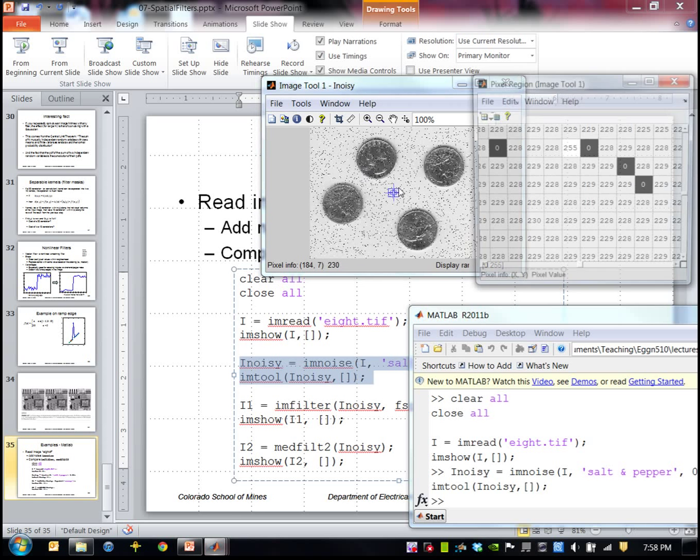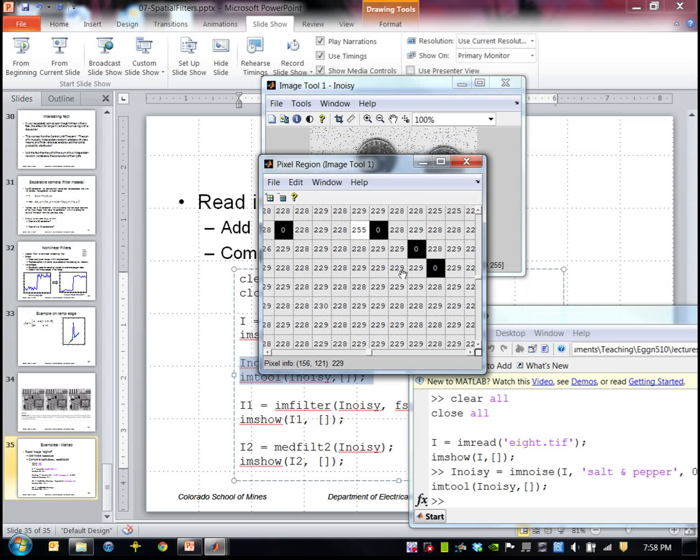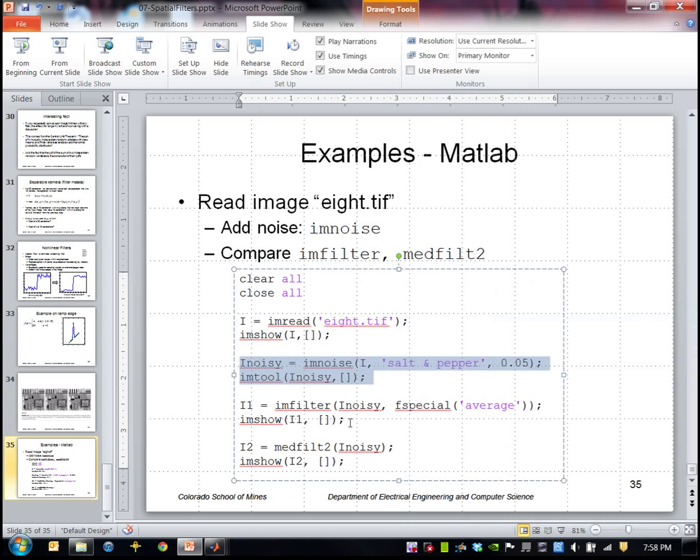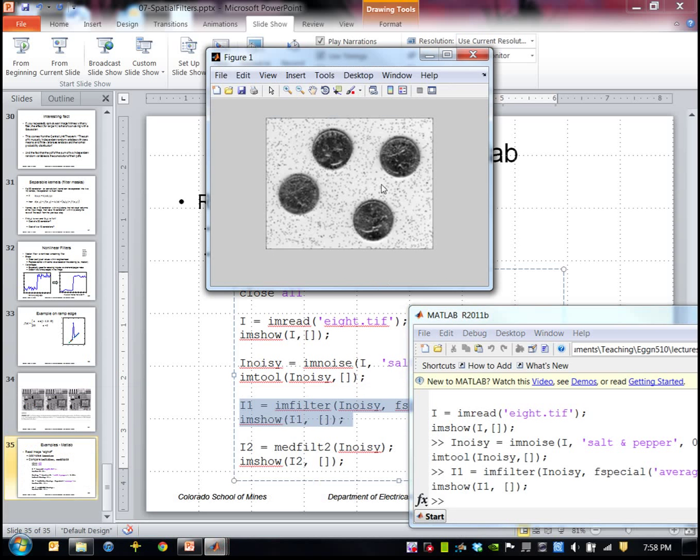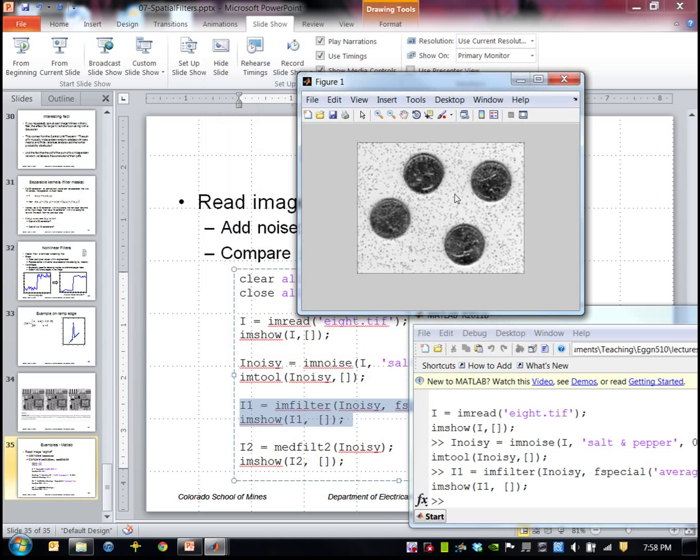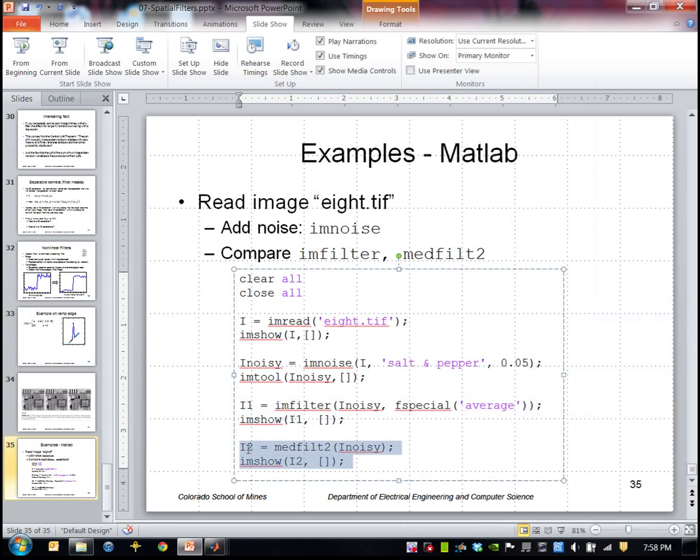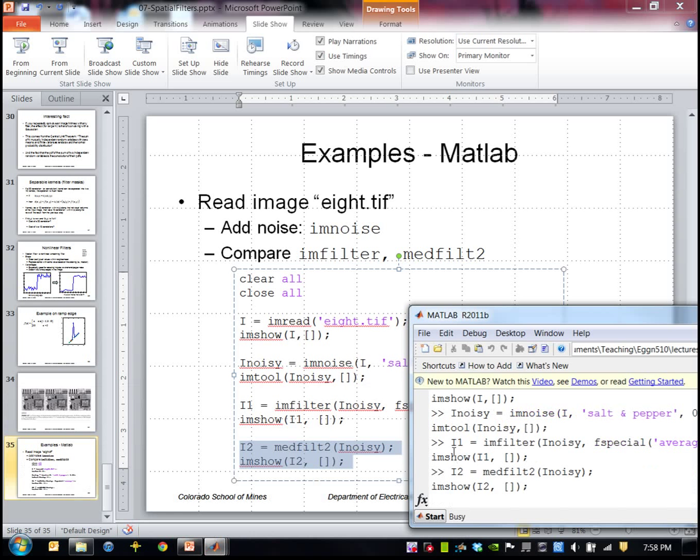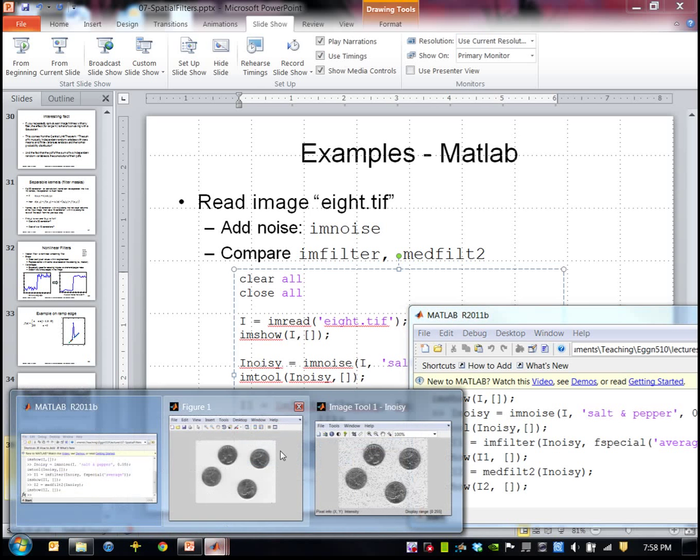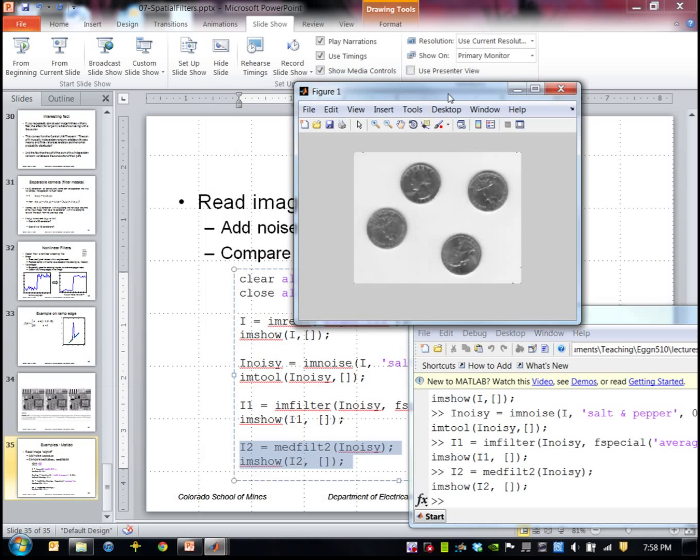I'm going to perform an averaging filter using imfilter and this is the result of that. So it doesn't really reduce the noise that much. Then I'm going to run a two-dimensional median filter on that noisy image, and as you can see that greatly reduces the noise here.